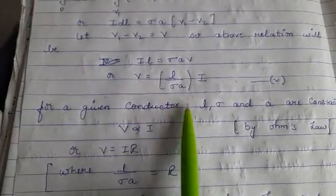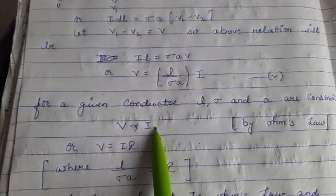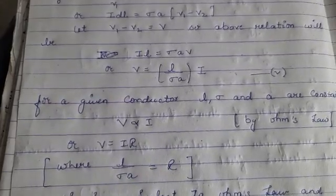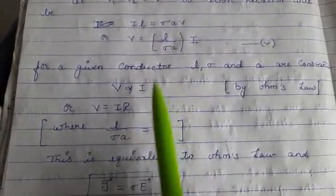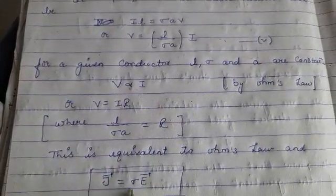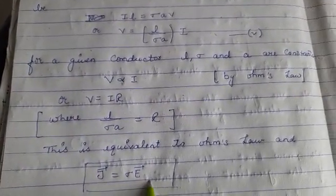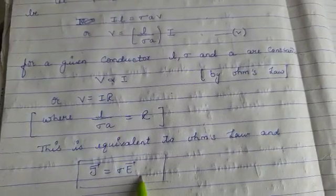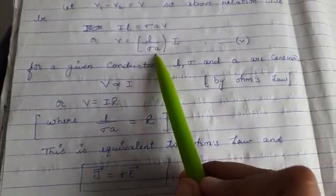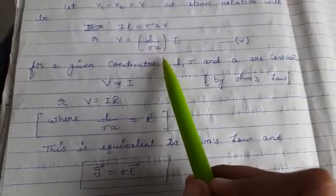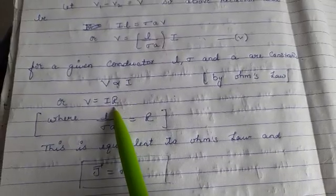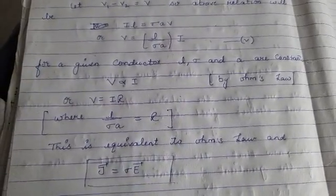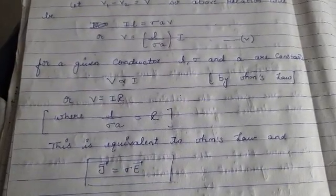...and that means V is directly proportional to I. So this is the statement of Ohm's law. By this I can say that this is also equivalent to J equals sigma into E, because we know that one over sigma A equals R, which is resistance of the conductor. Hope it's clear to you. Thank you.